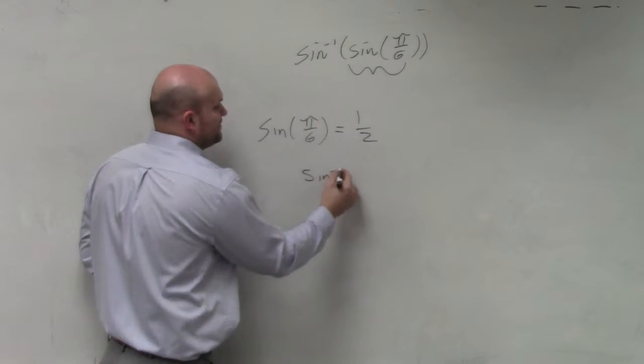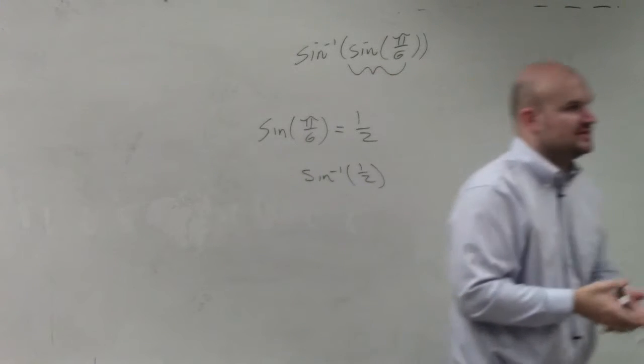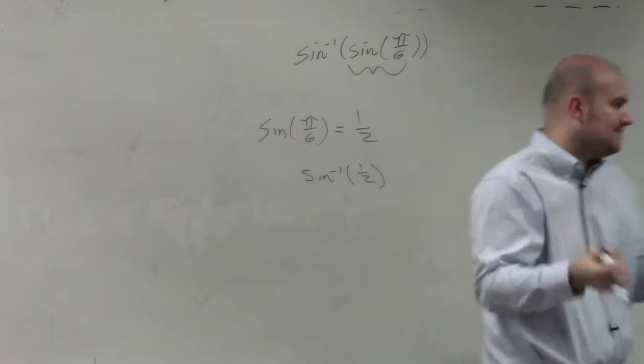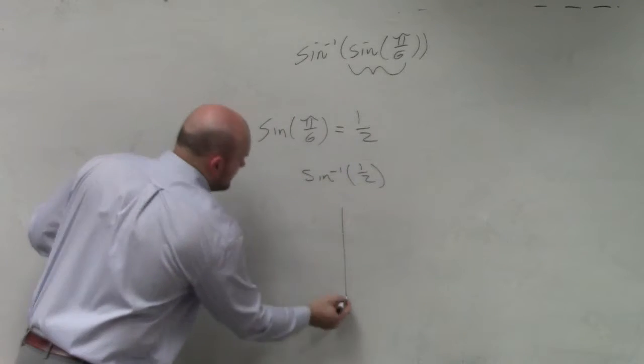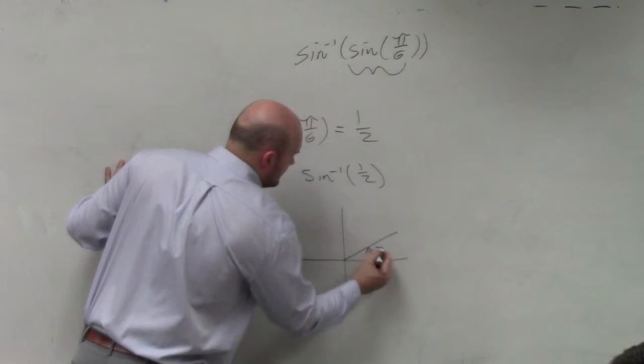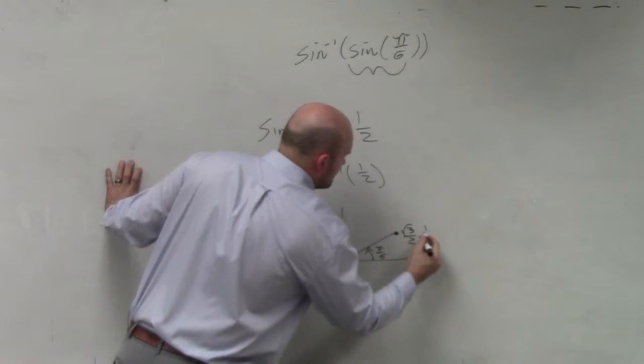Then we have inverse sine of 1 half. So what angle produces 1 half? Now again, there's two angles that produce 1 half. If you look at the unit circle, we know that this angle, pi over 6, produces 1 half.